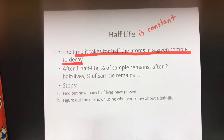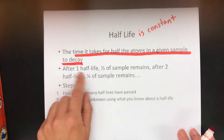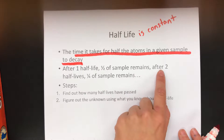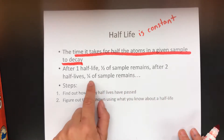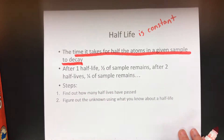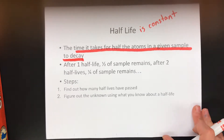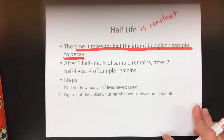To go from 100 to 50, 50 to 25, and so forth, that actual time stays the same. After one half-life you're left with half the sample, after two half-lives you have one quarter of the sample. Now this math can be a little bit tricky — you just have to pay attention and make sure you're following along with what's going on.